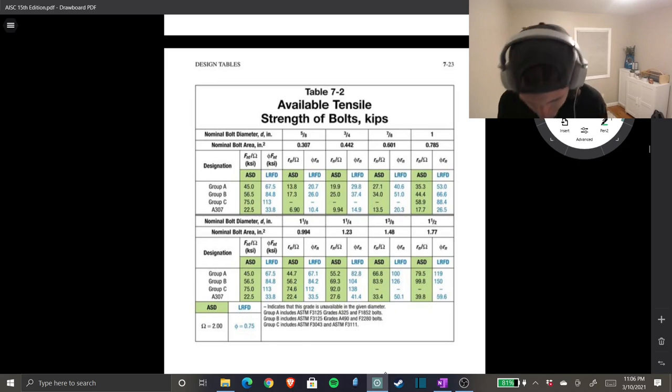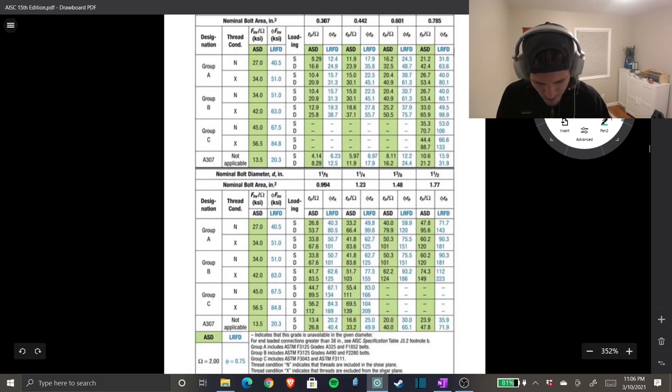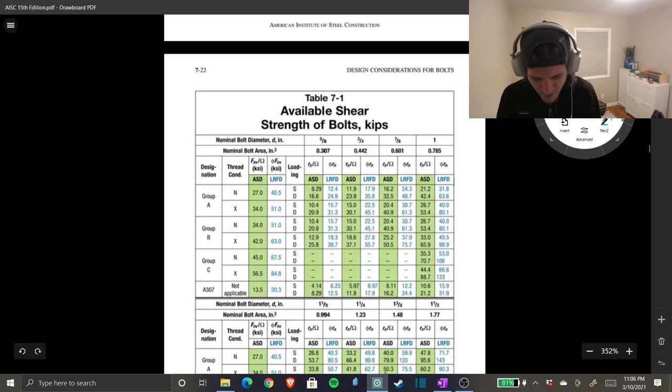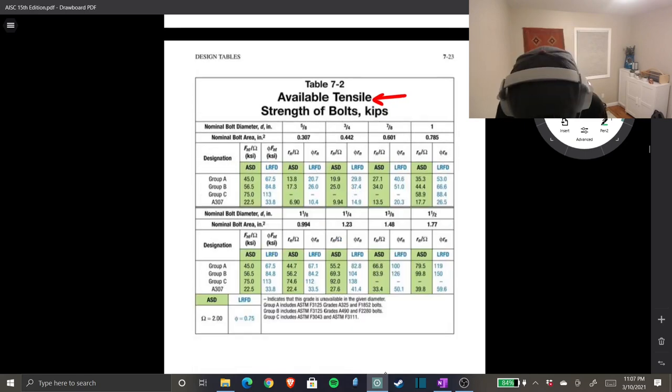They talked about A307 bolts. They're absolute garbage, but we're using them. We're going to go down to our A307. Notice this is available tensile strength of a bolt, because one page before is available shear for the same bolts, and the tables look very similar. Do not mess that up. Star it, do whatever you got to do to remind yourself that they're two different things and to double-check yourself.